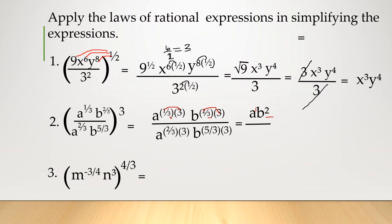Now for the denominator: we have 2 thirds times 3 also. 2 times 3 is 6, divided by 3, that is 2 — so we have a squared. And then for b: 5 over 3 times 3: 5 times 3 is 15, divided by 3, that is 5 — so b raised to the 5th power.